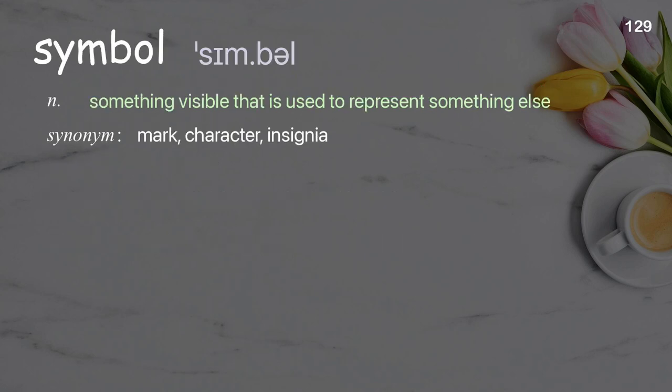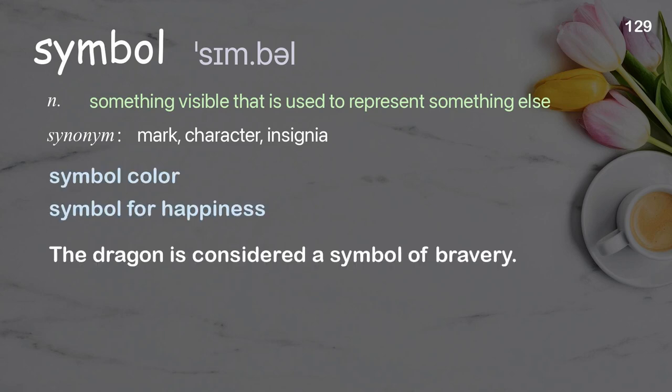Symbol: something visible that is used to represent something else. Examples: symbol color, symbol for happiness. The dragon is considered a symbol of bravery.